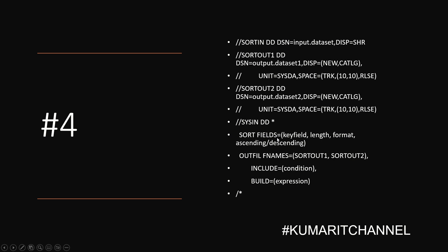The output card is used to create two output data sets — SORTOUT1 and SORTOUT2 — from a single input data set. The INCLUDE parameter specifies the condition for including records in the output file, while the BUILD parameter specifies the data fields to include in the output file. So this specifies that you want the file to be split into two, and you add the condition with the INCLUDE keyword.